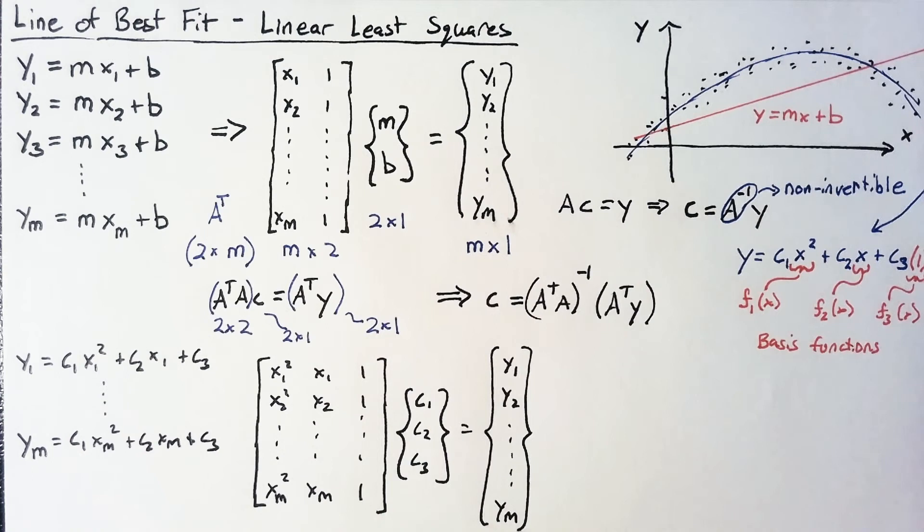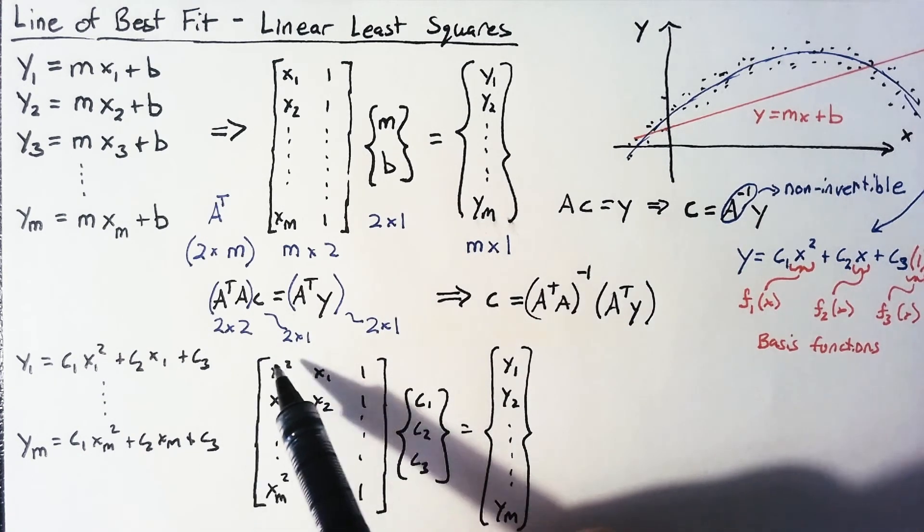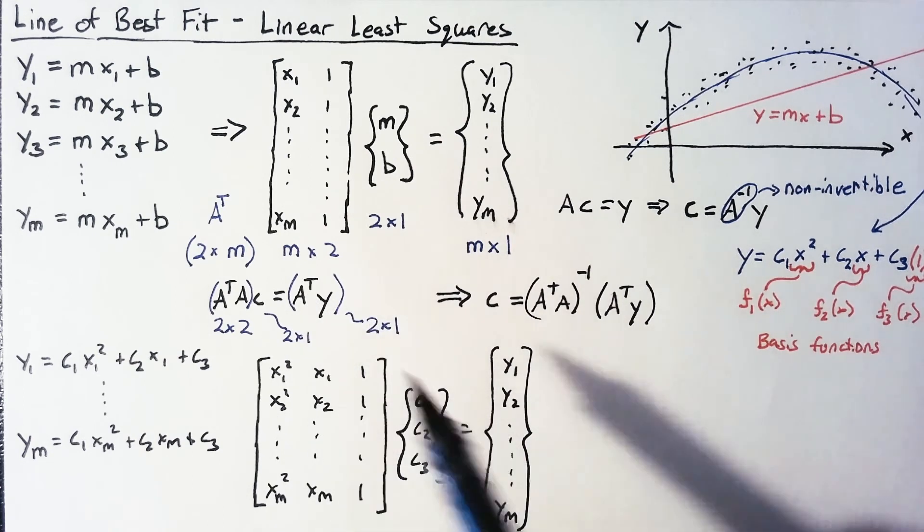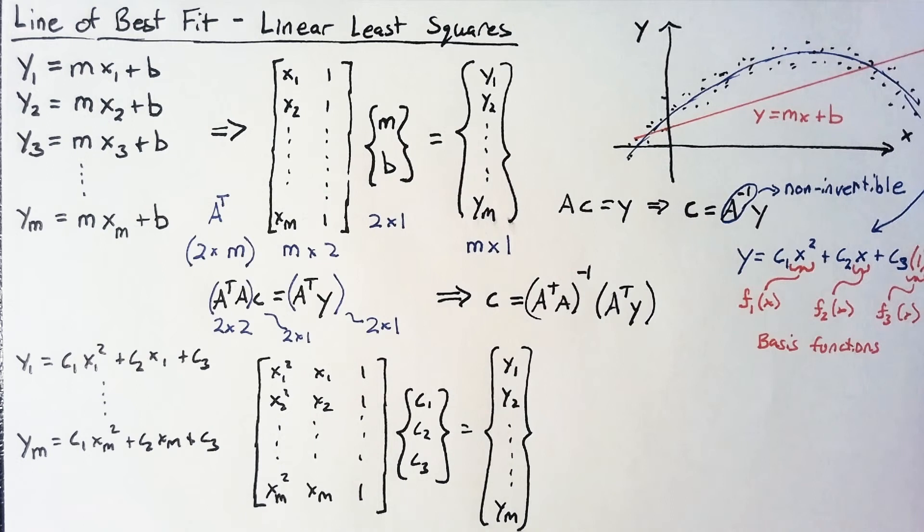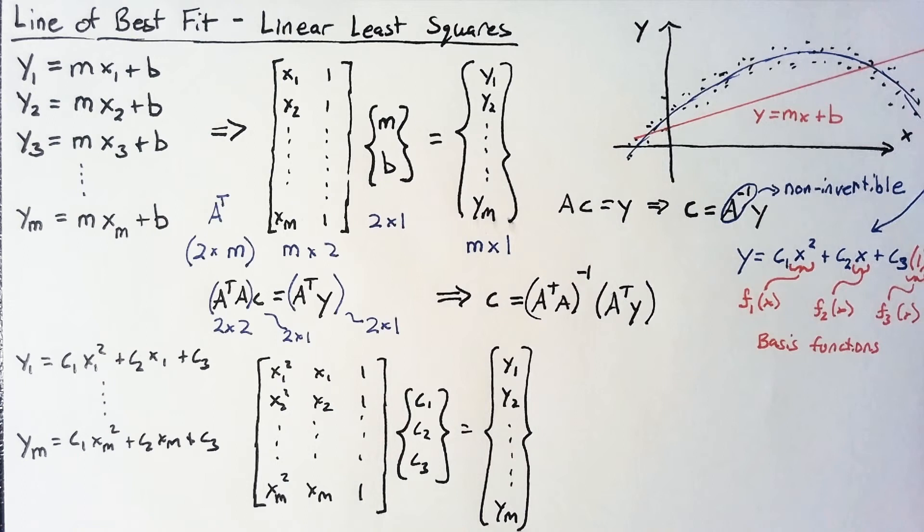And then we'd have a M by 3 matrix, which we could still multiply by A transpose and get a 3 by 3. So now instead of this 2 by 2, we'd have a 3 by 3 multiplied by a 3 by 1, our C matrix, and then A transpose Y would end up as a 3 by 1. And so we could solve for C1, C2, C3 still using this same formula.